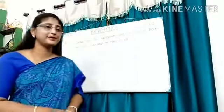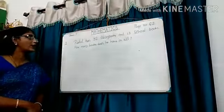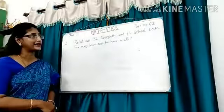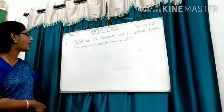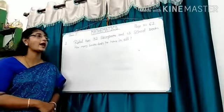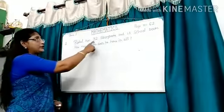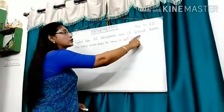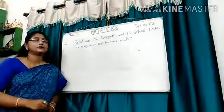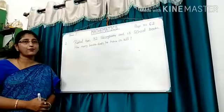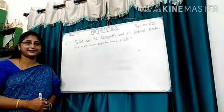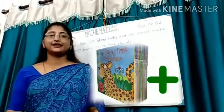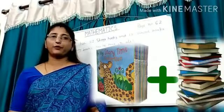Let's solve this example. Rahul has 32 story books and 13 school books. How many books does he have in all? To get the total number of books, they should be added: 32 story books plus 13 school books.